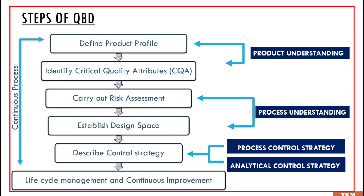If we take a look at the steps of QBD, on the basis of product understanding and process understanding, the first two steps of QBD are more about product understanding, whereas the third and fourth steps are more about process understanding. The control strategy is mainly of two types: process control strategy and analytical control strategy.